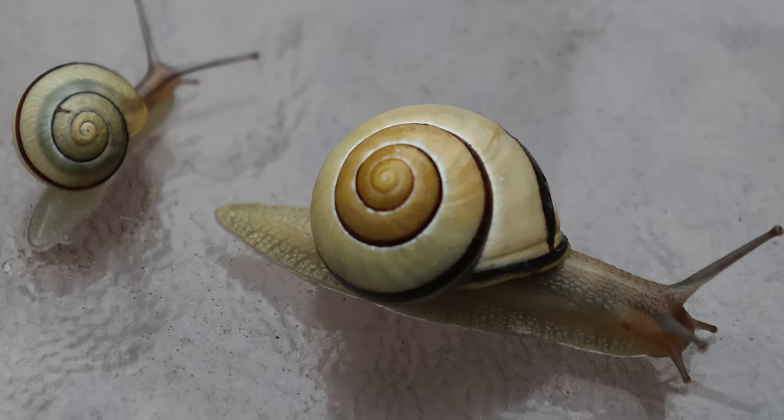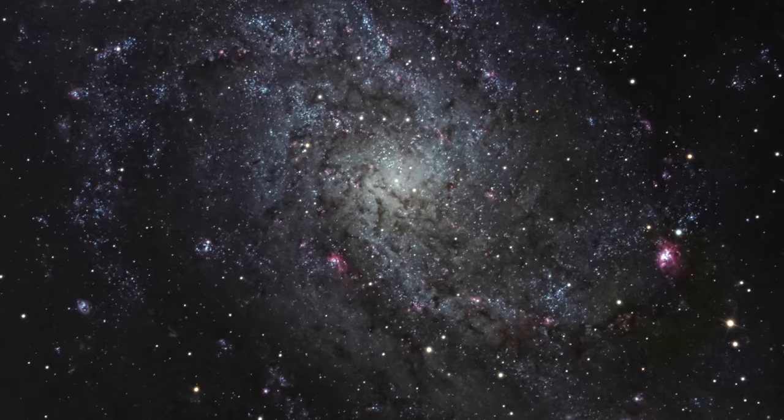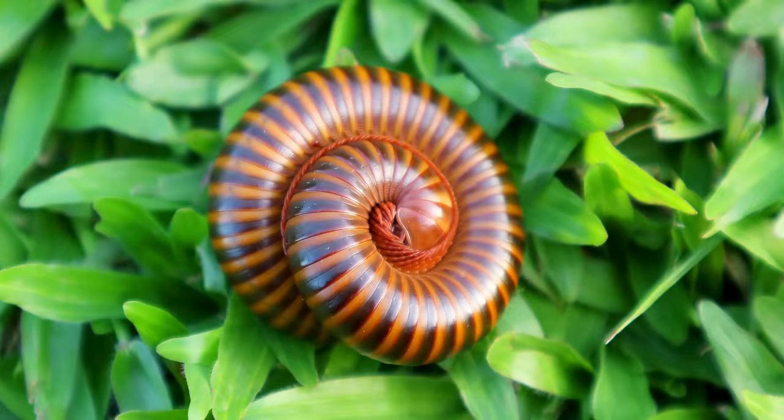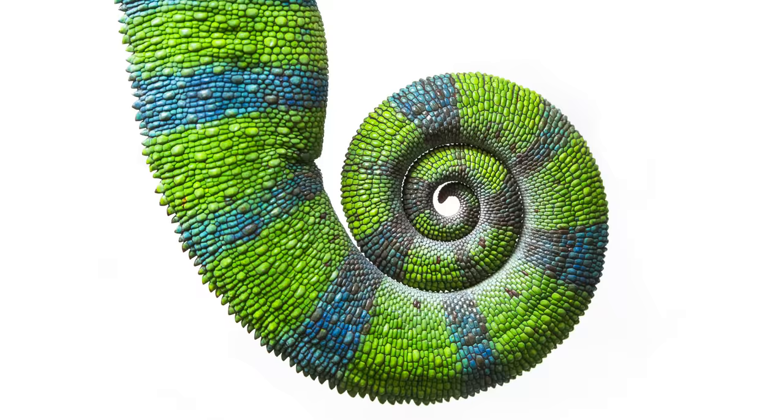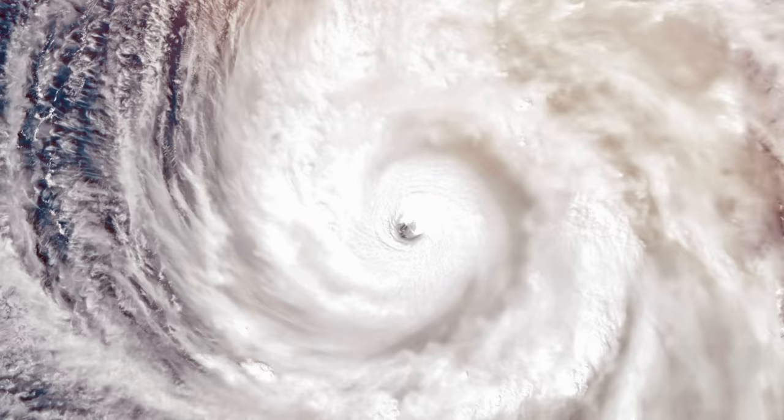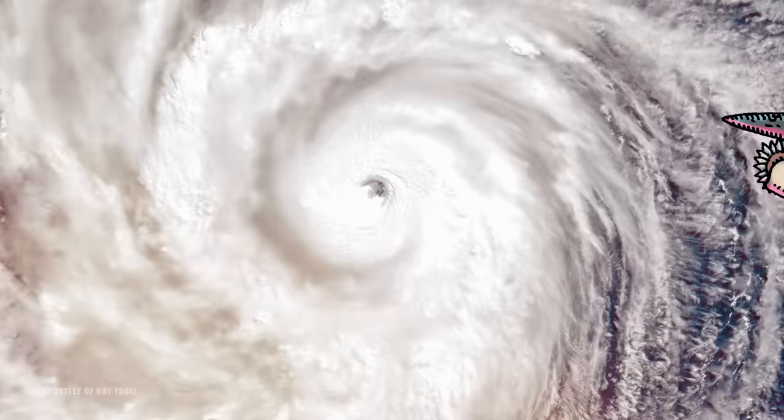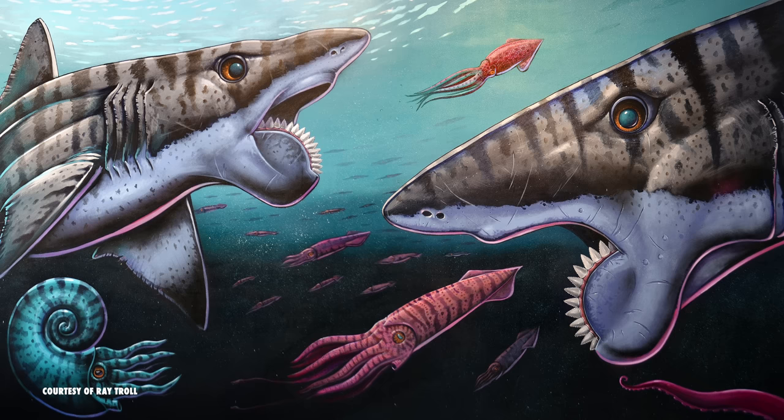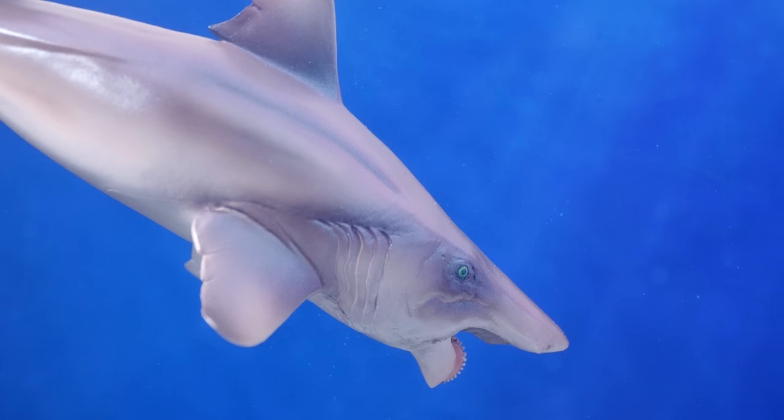From the smallest gastropods to whole galaxies, the spiral is a shape that we see again and again in our natural world. One place you wouldn't expect to find it, however, is in the toothy mouth of a giant extinct shark-like fish that lived over 250 million years ago. This is Helicoprion.